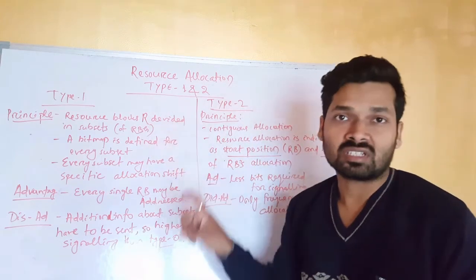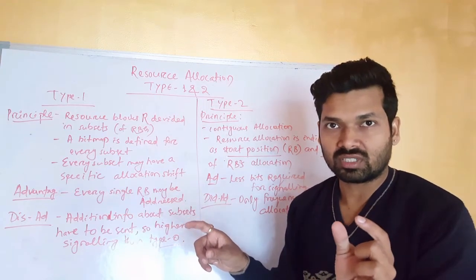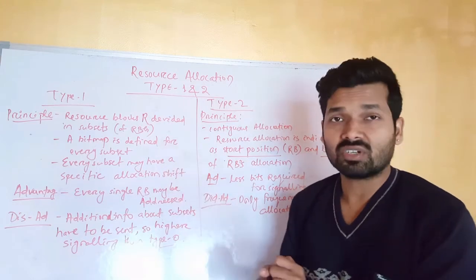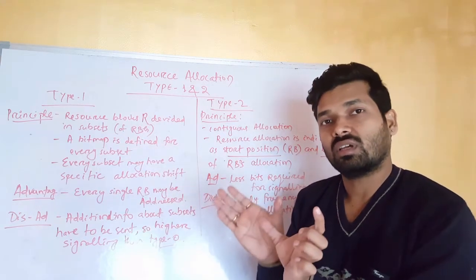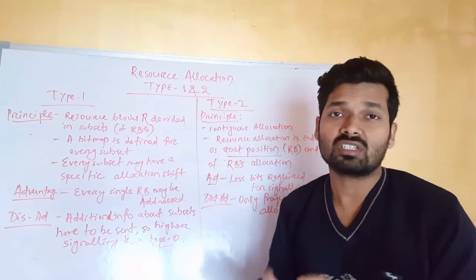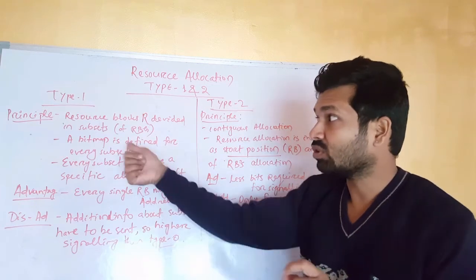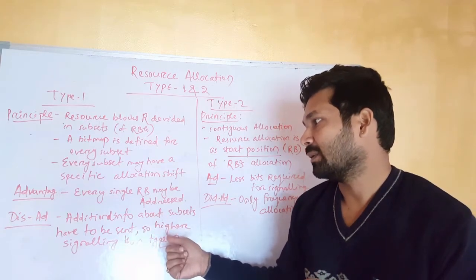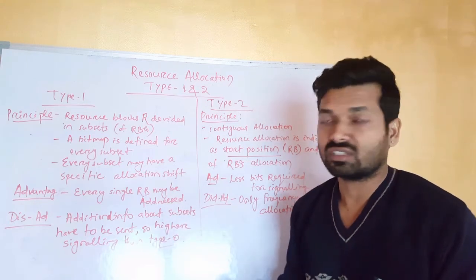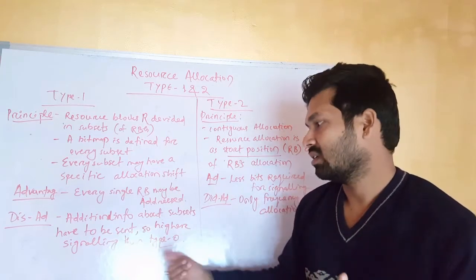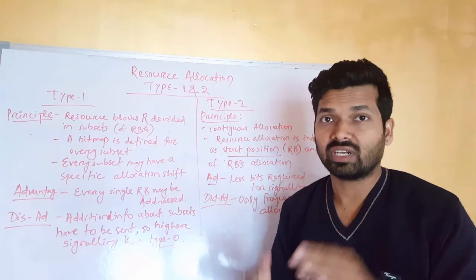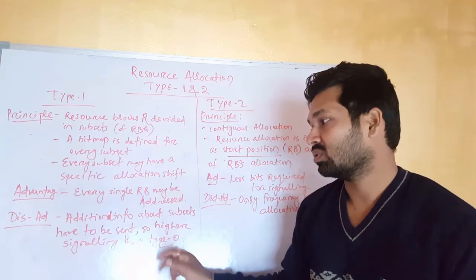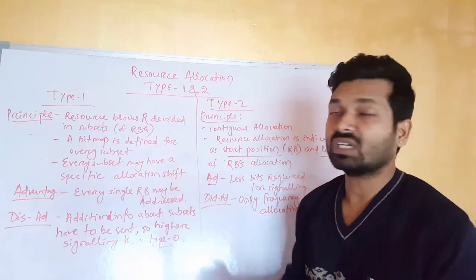When you introduce subsets in type 1 — earlier it was only resource blocks, then in type 0 you introduced resource block groups and addressed one group with one bitmap — now in type 1 you are combining resource block groups to form a subset and addressing one subset with one bitmap. For that subset you need to share additional information, which requires additional signaling bits. So it is slightly higher signaling compared to type 0, but definitely lower than the original approach of addressing one bitmap per resource block.